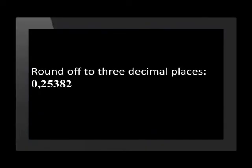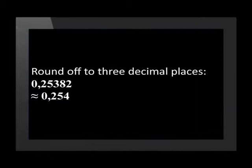Let's do a couple of examples to help us. We are going to round off the number 0.25382 to three decimal places. We see that 3 is in the third decimal place. This means we must look at the digit to the right of the 3, which is 8. Because 8 is greater than 5, we need to round up. This means that the third digit must be increased by 1. Once this is done, all the other digits must be dropped. Thus, 0.25382 is approximately equal to 0.254.